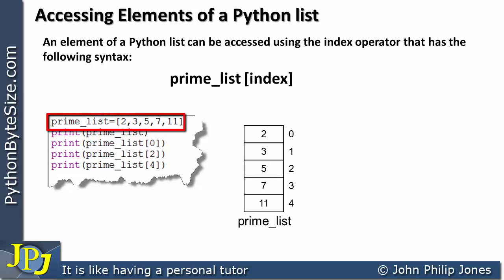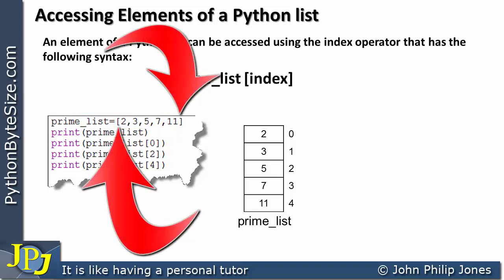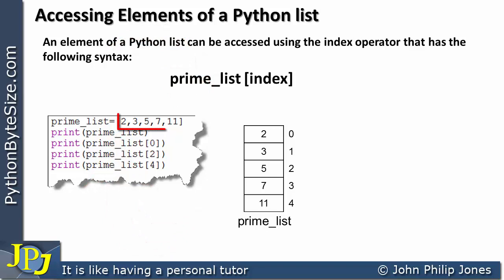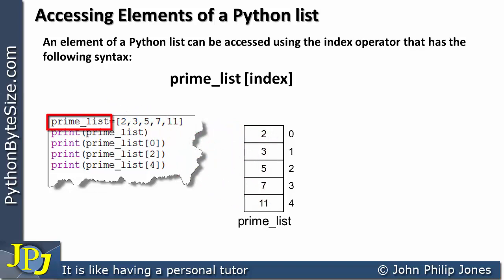Let's consider the following program. On the first line, prime_list has been assigned a list — within the square brackets we have integers which happen to be prime numbers: 2, 3, 5, 7 and 11. This name is bound to an instance of the list class, and that object is storing these values.